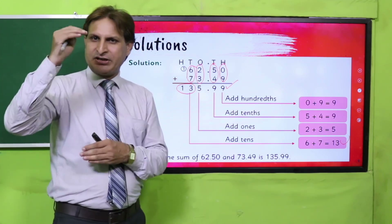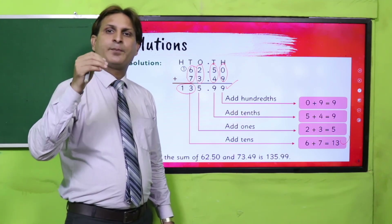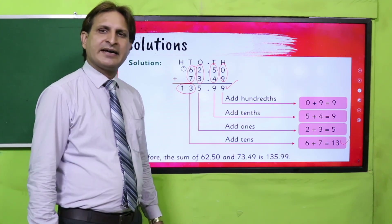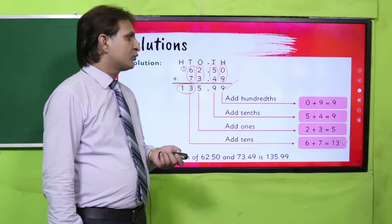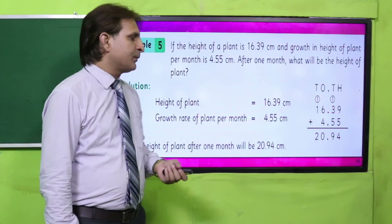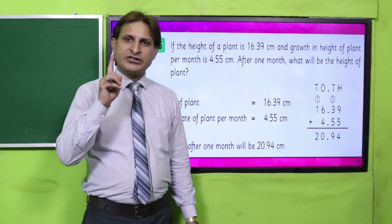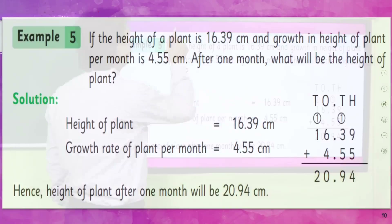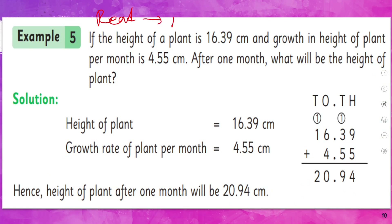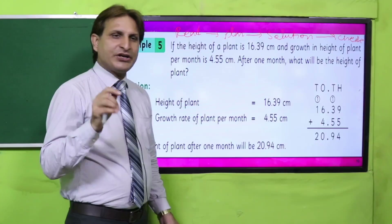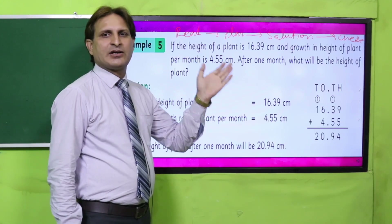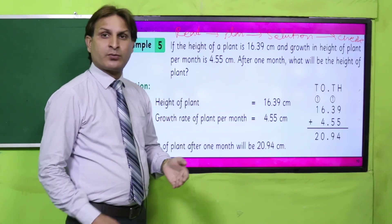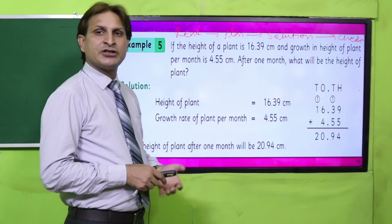Sabse pehle aapne karna kya hai? Given decimals ko vertical form mein write karna hai, phir same column wale digits ko add kar dena hai — vertical form mein place value chart ke andar. Ab students, aate hain next example par. Maine aapko bataya hai ke word problem kaise solve karni hai. Uske liye aapne four steps yaad rakhne hain: read the problem, plan to solve, make a solution, aur end mein check your answer.